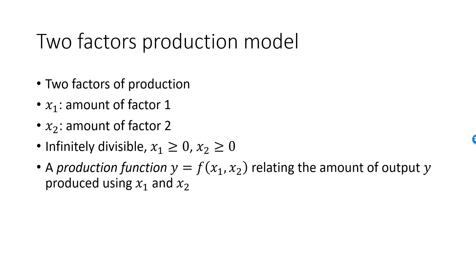The total amount of the output good is denoted by y. There is a given and known production function where y is a function of x1 and x2. The production function determines the amount of output we produce when we use x1 units of factor 1 and x2 units of factor 2.